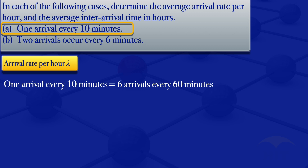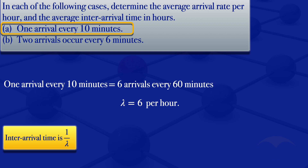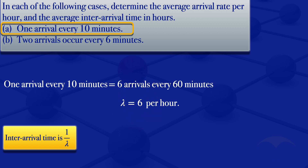So that will be our lambda — the arrival rate is 6 per hour. Now for the inter-arrival time: the inter-arrival time is the inverse of the average arrival rate, 1 over lambda. Our lambda is equal to 6, so our inter-arrival time, which is 1 over lambda, will be 1 over 6 hours. That's the inter-arrival time for question A.